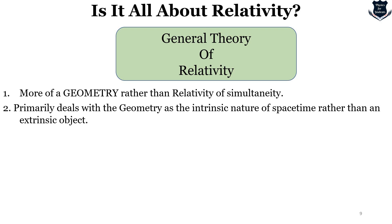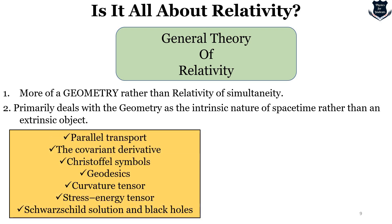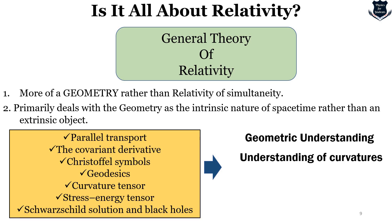So General Theory of Relativity is more of a geometry rather than relativity or simultaneity. It primarily deals with the geometry as the intrinsic nature of spacetime rather than extrinsic. You will immediately question: what is extrinsic geometry at a global scale? That is something called topology. All of these — parallel transport, covariant derivatives, Christoffel symbols, geodesics, curvature tensors, stress-energy, Schwarzschild solutions — are more of a geometric understanding of physics and mathematics. It is all about the understanding of curvature, more intuitive in nature.